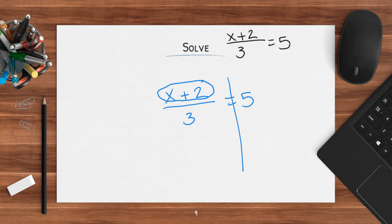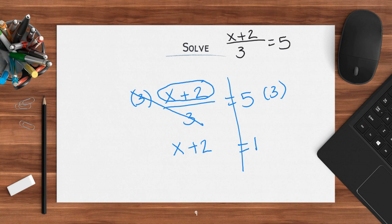Remember how I say you get rid of what is furthest from x first? On top, this x plus 2 is together. So I need to start by getting rid of the divide by 3. If I'm dividing by 3, the inverse is to multiply by 3. I multiply by 3 on both sides. That cancels out — 3 divided by 3 equals 1 — so I get rid of the denominator. Now I just have x plus 2 equals 5 times 3, which is 15. I see addition, so I do subtraction. 2 minus 2 cancels out. x equals 15 minus 2, which is 13.